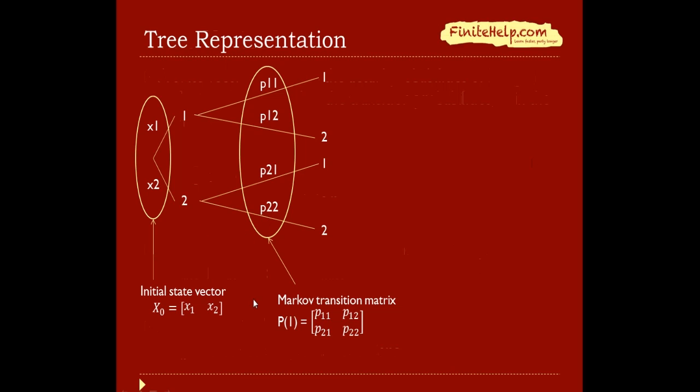To see the representation on a tree, here previously this is the Markov transition matrix: p11, p12, p21, and p22. And here we have our initial state vector, x1 and x2. This is big X sub-zero.